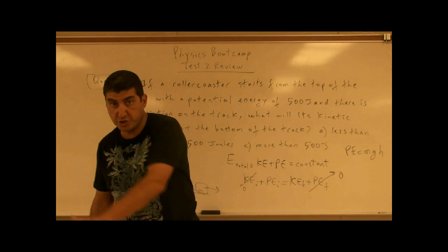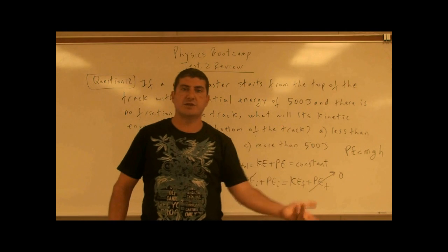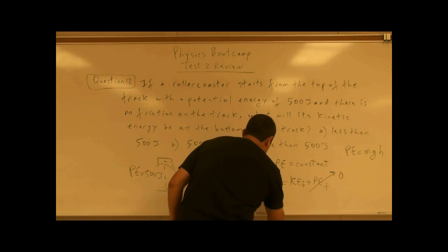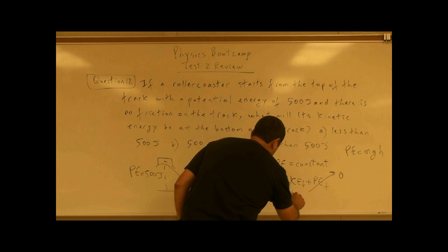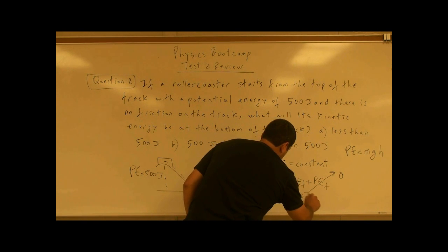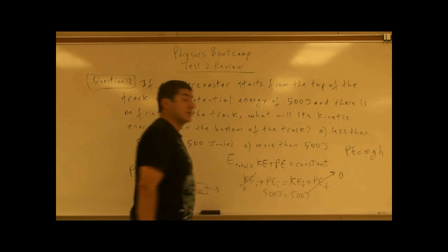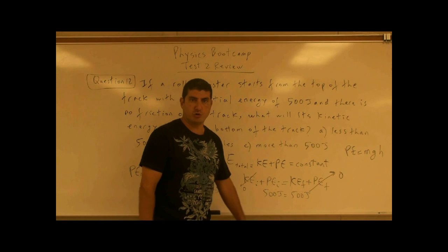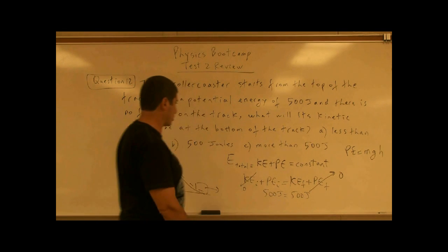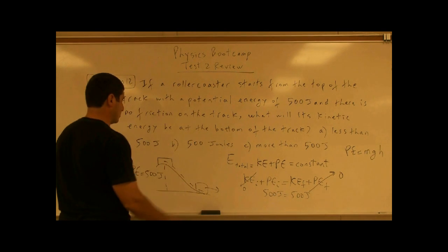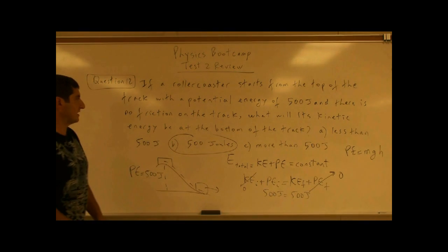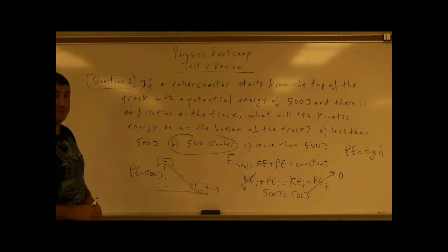One form of energy is converted into another form of energy. So if the initial potential energy is 500 joules, the final kinetic energy must also equal 500 joules. The answer is choice B.